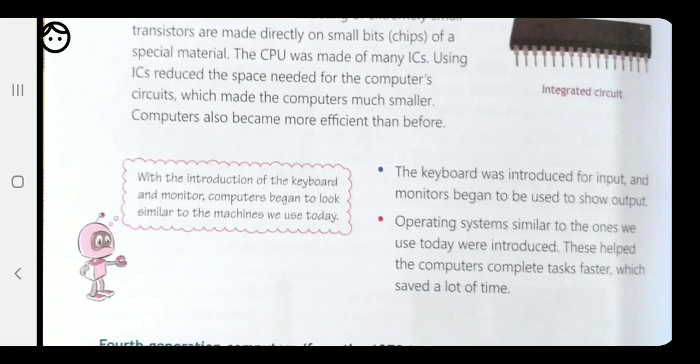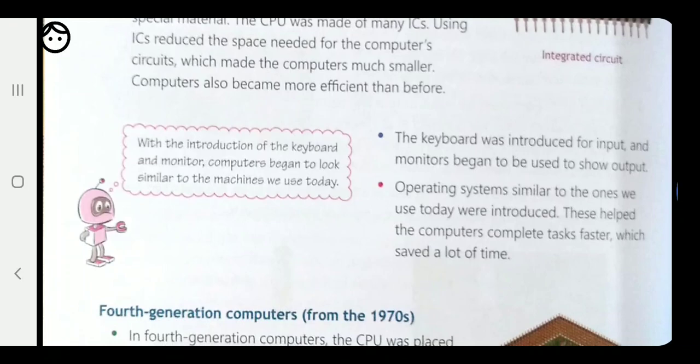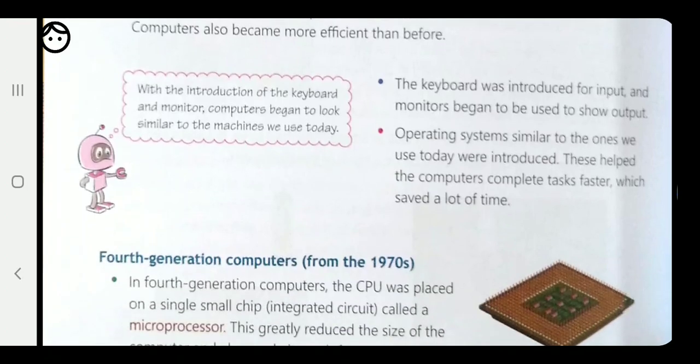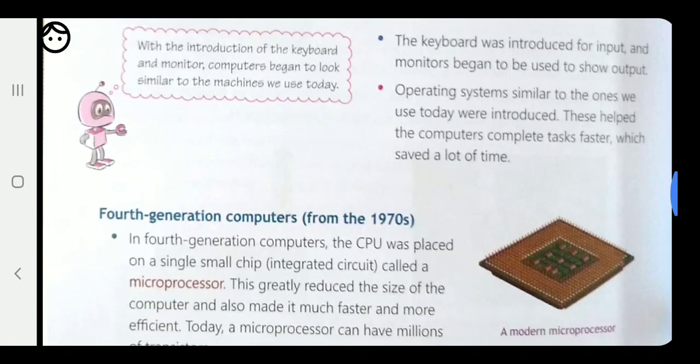Monitors began to be used as output devices. An operating system similar to the one we use today was introduced, which helped computers complete tasks faster and saved a lot of time. With the introduction of the keyboard and monitor, computers began to look similar to the machines we use today.